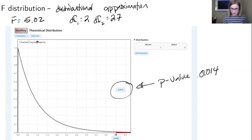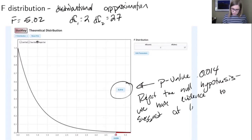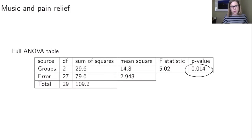The p-value of 0.014 from the F distribution is very similar to the 0.013 we found with randomization — just a little different due to the distributional approximation. We still reject the null hypothesis and have evidence to suggest at least one mean is different. The p-value from the F distribution, 0.014, would be the final entry on the ANOVA table.